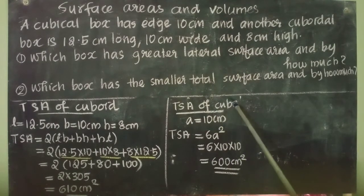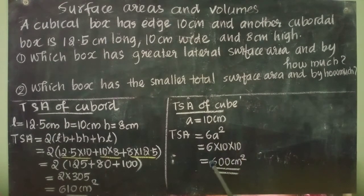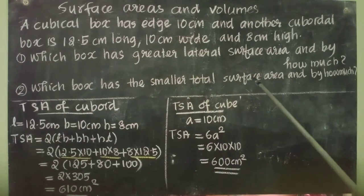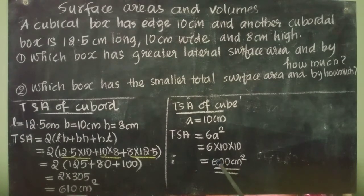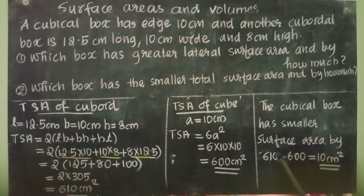Total surface area of cube: A = 10 cm. TSA = 6A² = 6 × 10 × 10 = 600 cm². The question asks which box has the smallest total surface area — the cubical box. The cubical box has smaller total surface area by 610 − 600 = 10 cm².